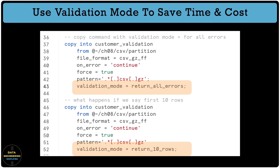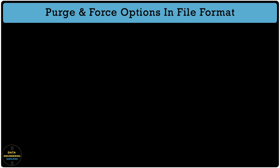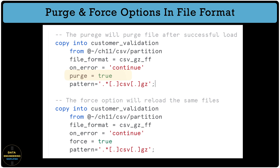Let's talk about the PURGE and FORCE options. As a common practice, if you want files to be removed after successful loading into the Snowflake table, you can use the PURGE option in the COPY command. If you want the same set of files to be reloaded, set the FORCE option to true — use this very carefully. If the purge operation fails for any reason, no error is returned by Snowflake, so it is recommended to use the LIST command to check staged files periodically and manually remove successfully loaded files. If you have a lot of data files at your stage location, whether internal or external, it makes the file listing process time-consuming and impacts data loading speed. Use PURGE or the REMOVE command to delete successfully loaded files so your overall data loading happens faster.